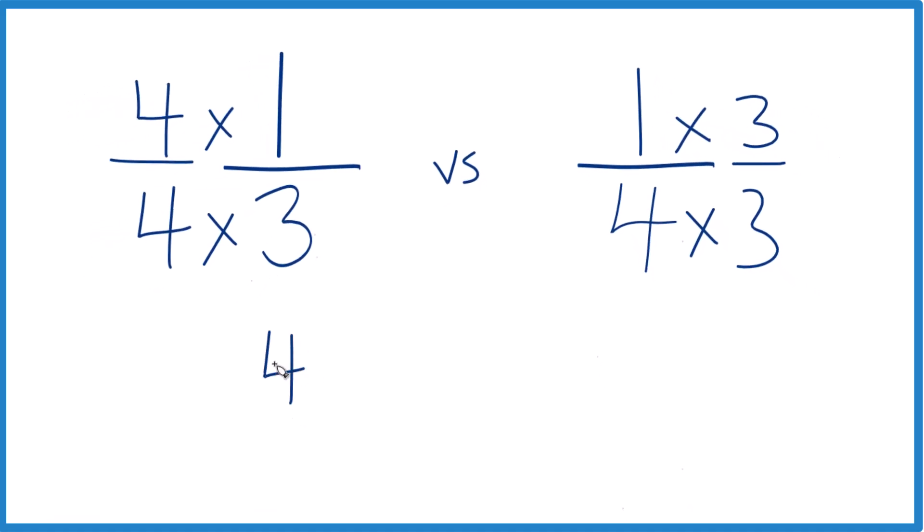Four times one is four. Four times three, that's 12. And over here, one times three is three. Four times three is 12.